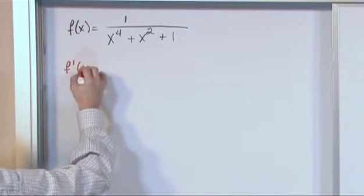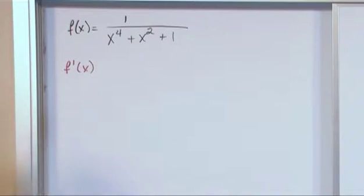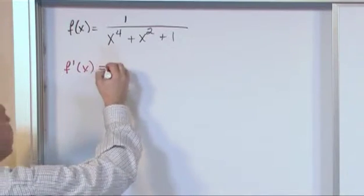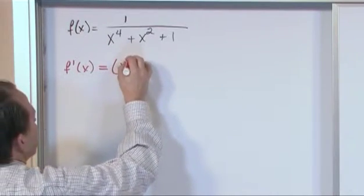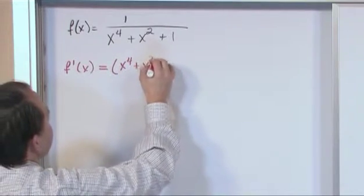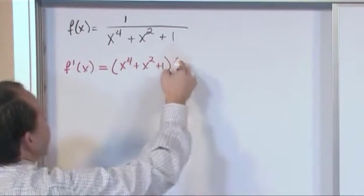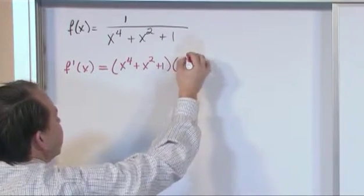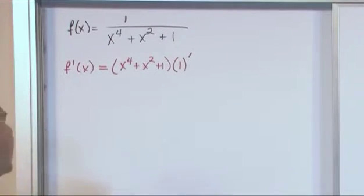f prime of x. How do we use the quotient rule? Recall from the last section. All it is is the bottom function x to the fourth plus x squared plus 1 times the derivative of the top function. So here we have the number 1. We need to take its derivative so we'll mark it like that.